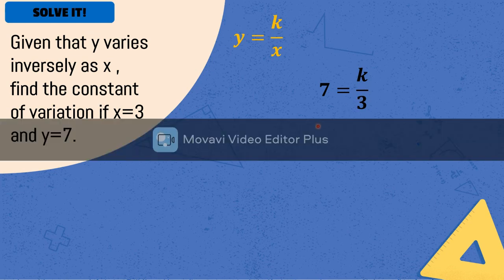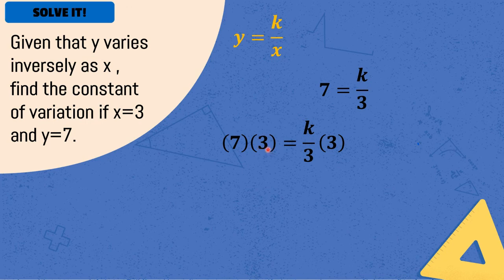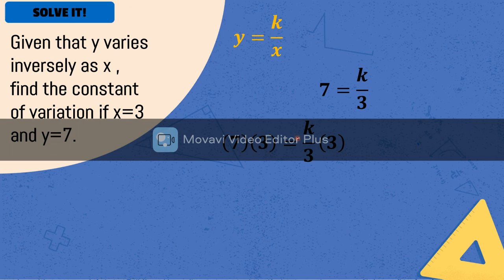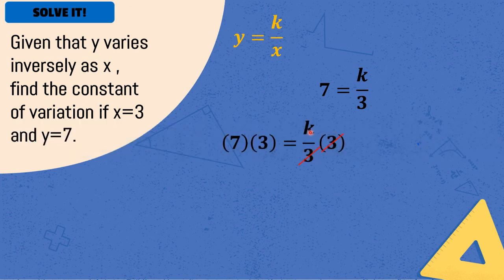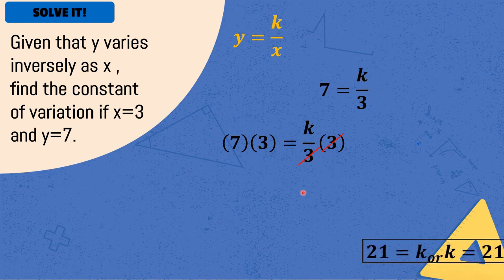Next, what we'll do is multiply both sides by 3 to eliminate the denominator of k which is 3. This is our second equation. We multiply both sides by 3. Next, we can simplify this since we can multiply 3 by k. We divide the numerator by 3. So, cancel, cancel. What's left here is k. And then, multiply 7 times 3, the product is 21. Therefore, the constant of variation is equal to 21.